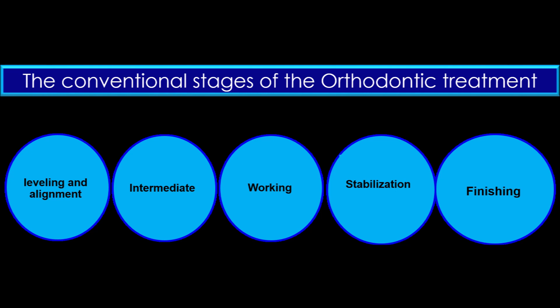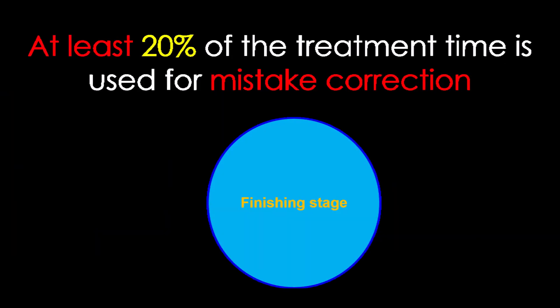In conventional orthodontic treatment, we can distinguish five steps: leveling alignment, intermediate, walking stage, stabilization and the finishing stage. Each stage requires a different time duration before we can progress to the next step. There are two major steps which are greatly influenced by parameters that we can better control in order to decrease the treatment time duration.